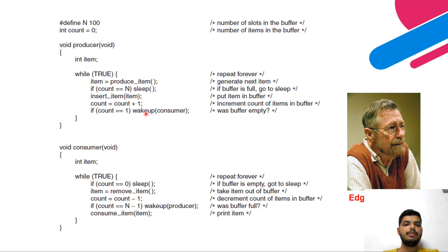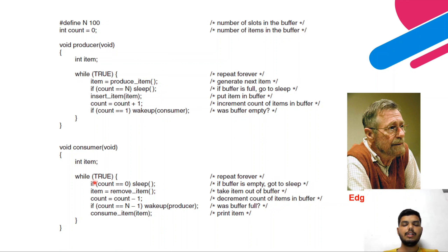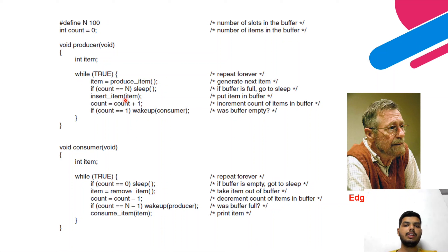After incrementing count, if count equals one — meaning this is the first item the producer has placed — it will wake up the consumer. This signals that production has started and the consumer can now begin consuming. So once the first item is placed in the buffer, the producer wakes up the consumer, and from that point the producer continues producing while the consumer begins consuming.